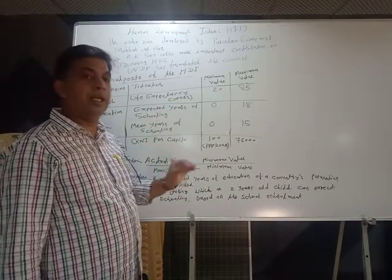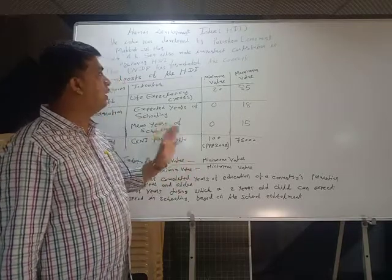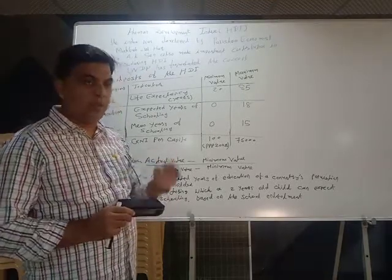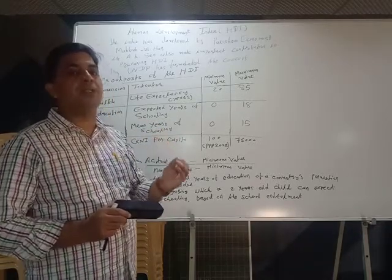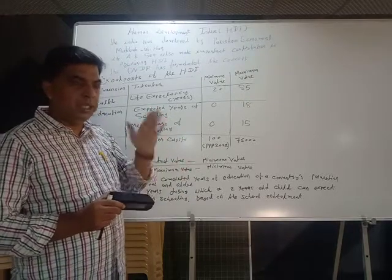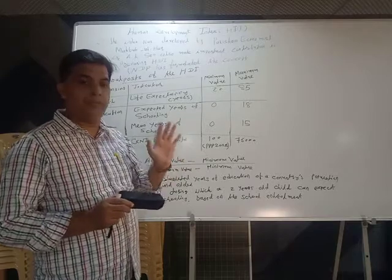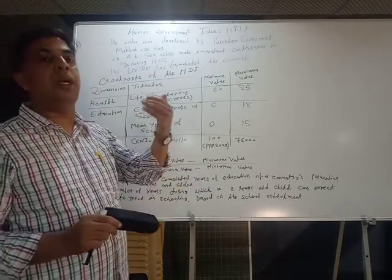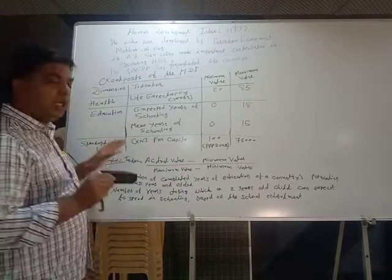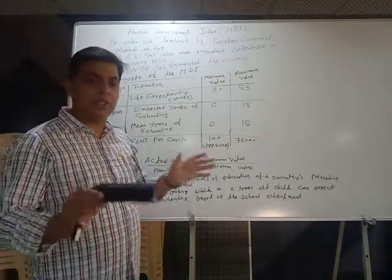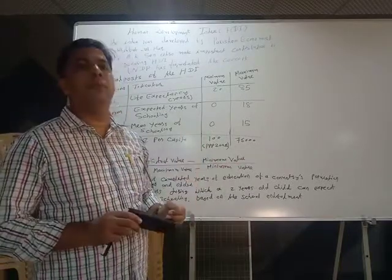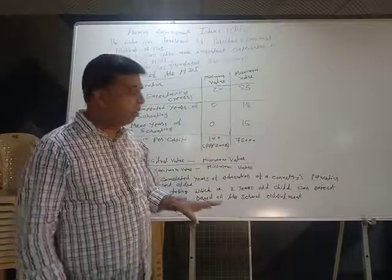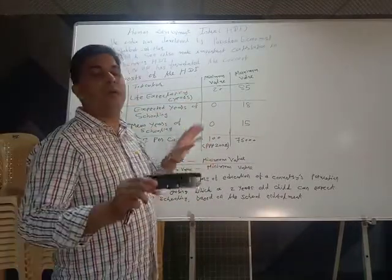To understand the concept of Human Development Index, we have to discuss three basic desires of a person. Every person wants to: first, live a long and healthy life; second, gain knowledge and be educated; and third, enjoy a decent standard of living. These are the three basic desires. There are many other desires like political freedom, freedom of speech, access to clean air, etcetera, but these are the three basic desires of a person.